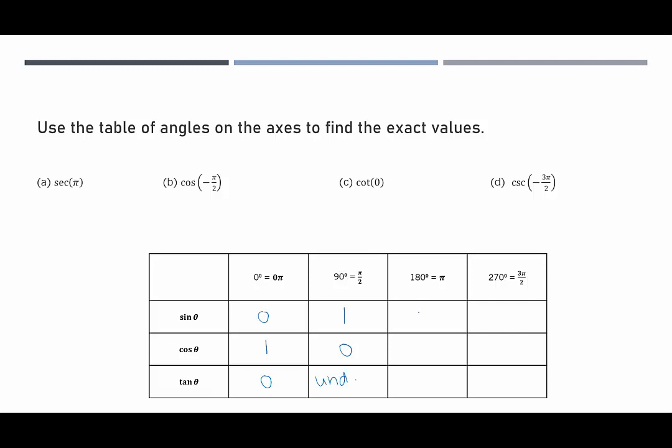Sine of 180 degrees is 0. Cosine is negative 1. Tangent is 0. And sine of 270 degrees is negative 1. Cosine is 0, and tangent is undefined. So good just to practice that again. Now let's get to these four examples.